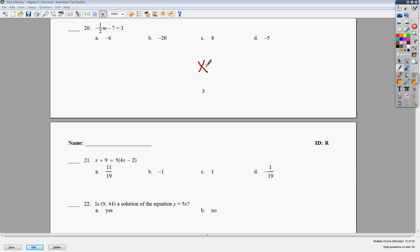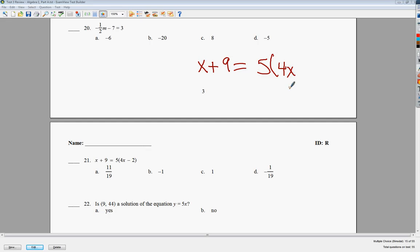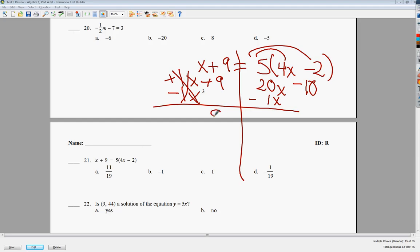Now, number 21, x plus 9 is equal to 5 times the quantity 4x minus 2. Draw my line here. I need to do the distributive property. Now, I've got an x term on both sides. I'm going to put a 1 there to see it. I'm going to move to the right this time just because I never do it. So I haven't done it so far this video anyway. So to get rid of plus 1x, I need to subtract 1.